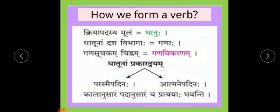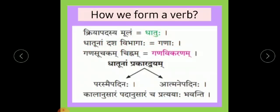Now, how do we form a verb? We studied this in the previous period. Kriya Padasyamulam — the main root of a verb — is called Dhatu. This Dhatu, or main verb root, is divided into ten parts called Ganaha. Ganaha means conjugations, and each conjugation has its own identification sign called Ganaha Vikaranam.